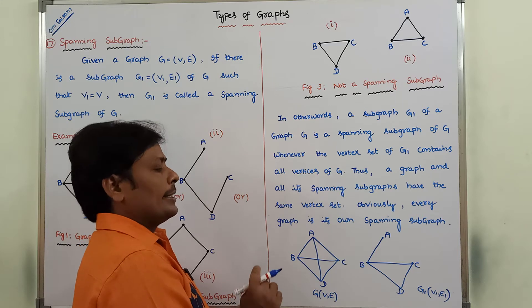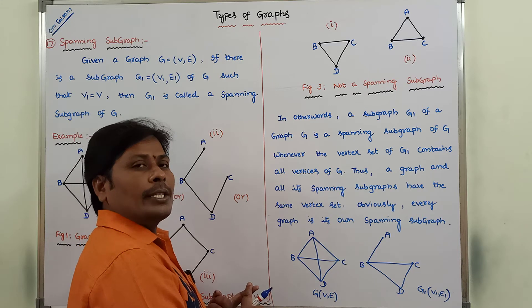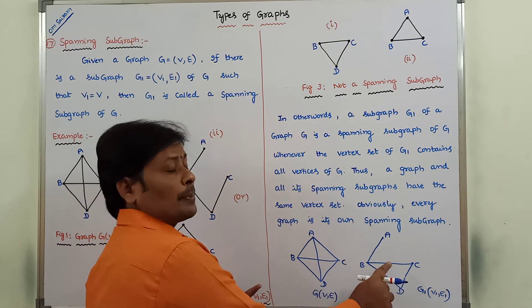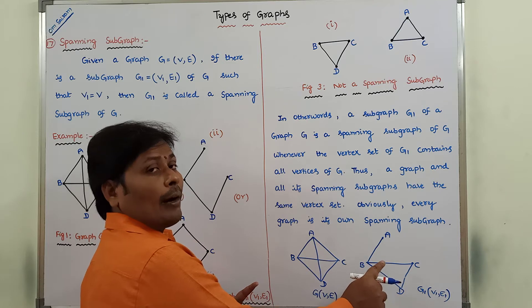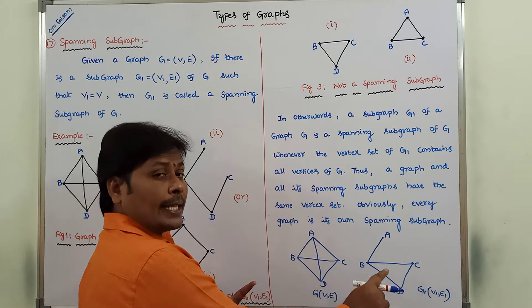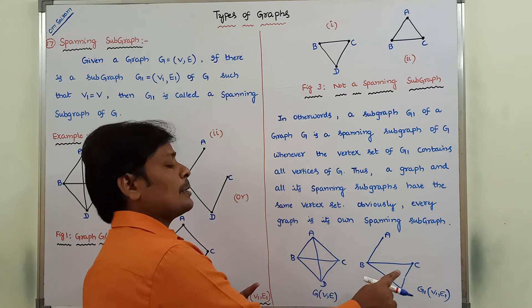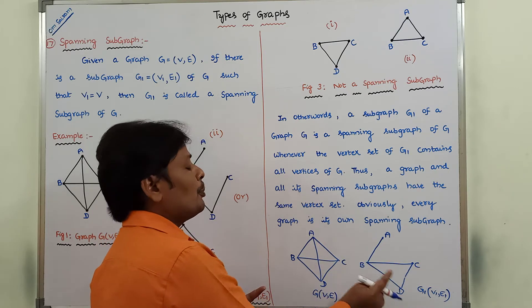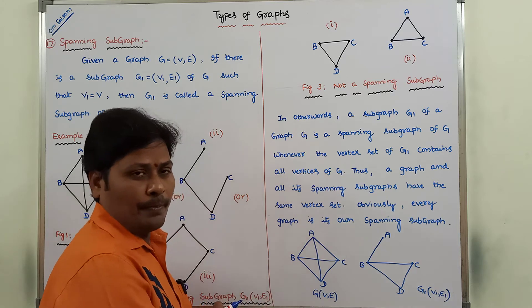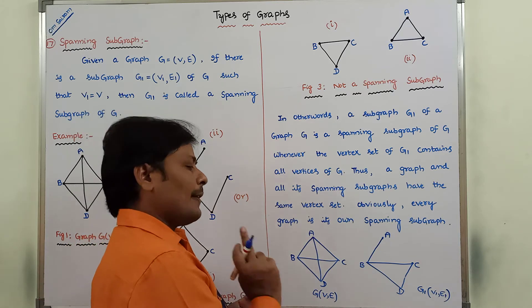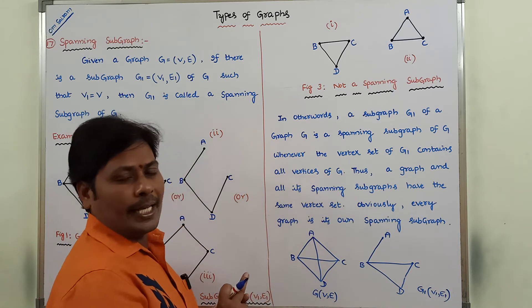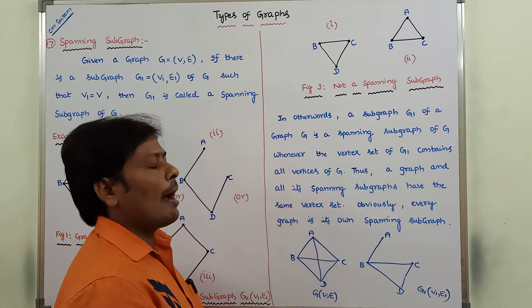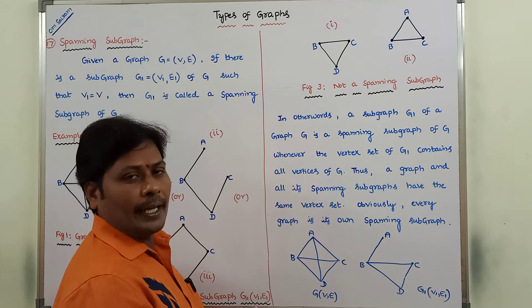The first condition is satisfied. All the vertices and edges present in G1 are also there in G. Now we have to verify the second condition.